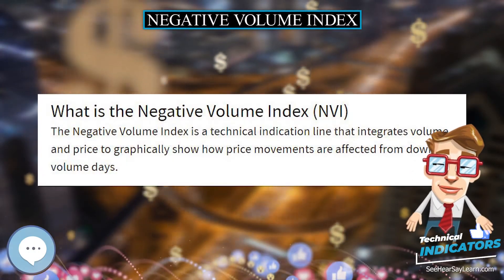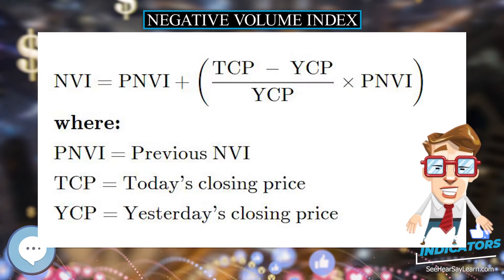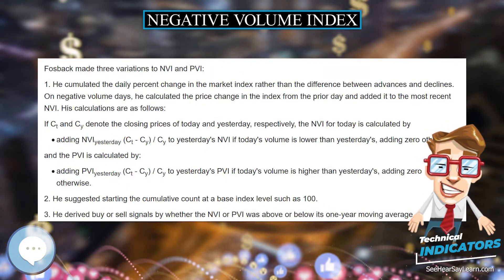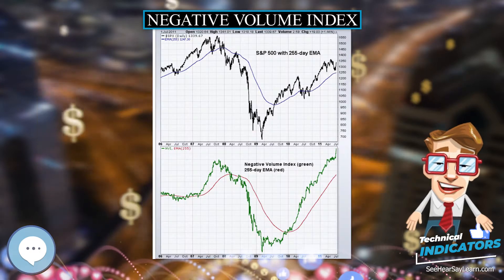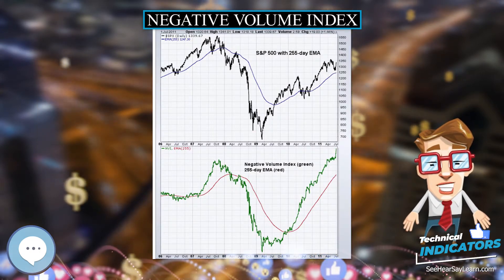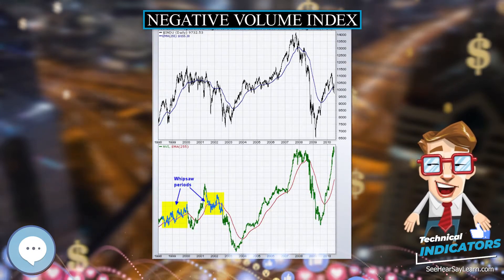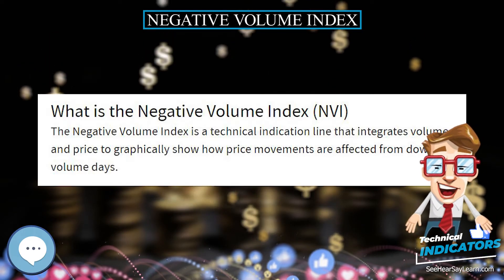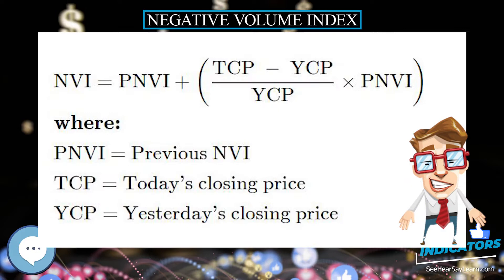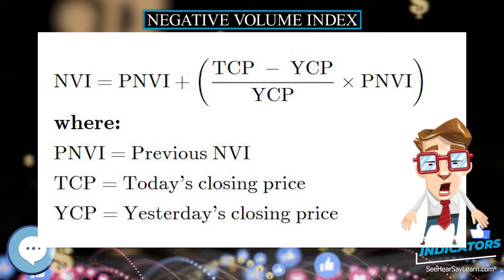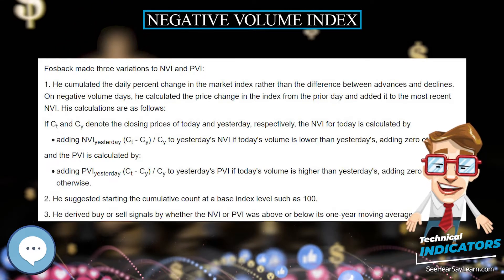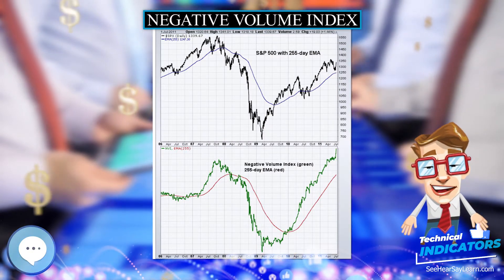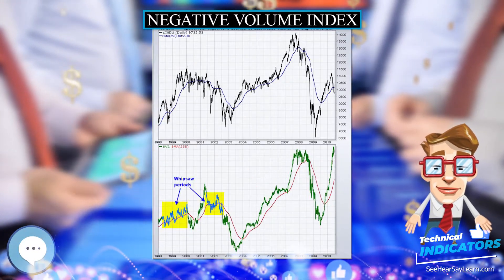Negative Volume Index. Nearly 78 years have passed since Paul L. Dysart Jr. invented the Negative Volume Index and Positive Volume Index indicators. The indicators remain useful to identify primary market trends and reversals. In 1936, Paul L. Dysart Jr. began accumulating two series of advances and declines distinguished by whether volume was greater or lesser than the prior day's volume. He called the cumulative series for the days when volume had been greater than the prior day's volume the Positive Volume Index, and the series for the days when volume had been lesser the Negative Volume Index.